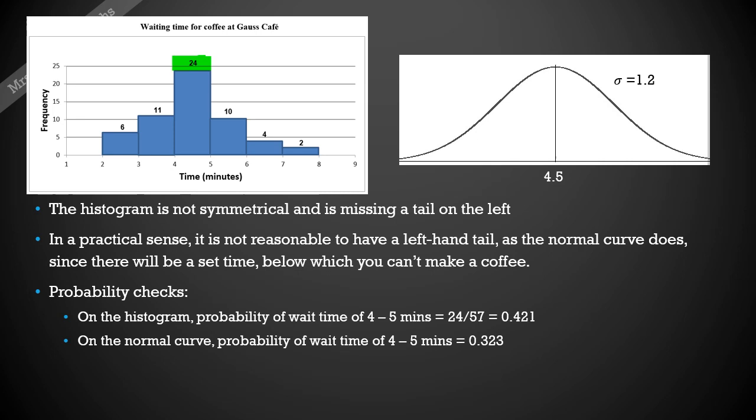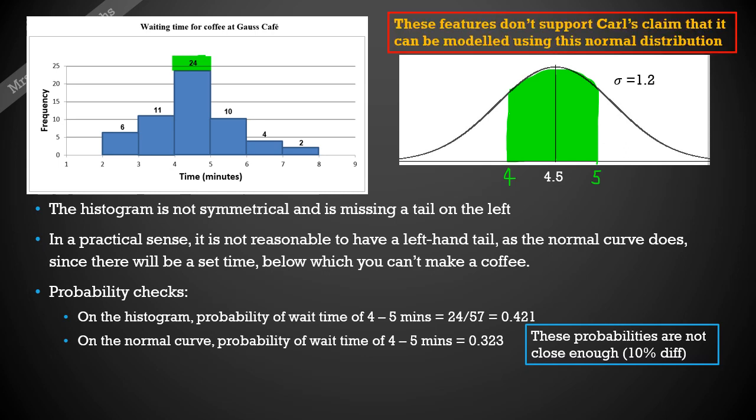If we take that same interval on the normal curve, so between four and five, and run our calculations on that, we get the probability to be 0.323. Now that difference is not really close enough. We're getting to a 10 percent difference now which is getting fairly significant. So these features that we've pulled out don't support Carl's claim that it can be modeled using a normal distribution.